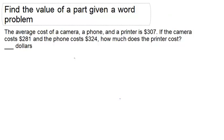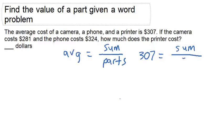In this example, we need to recognize that average is always equal to the sum divided by the number of parts. In this particular case, our average is $307, and it's equal to the sum divided by 3 parts.